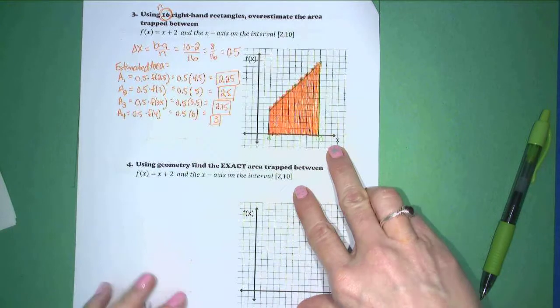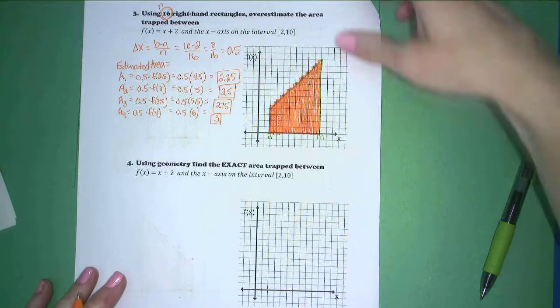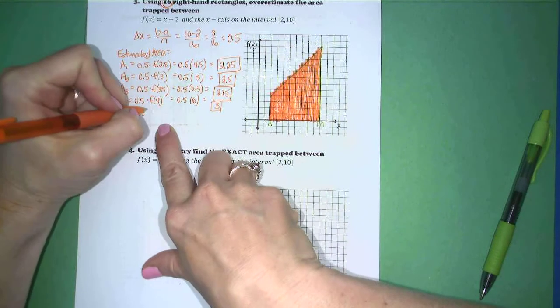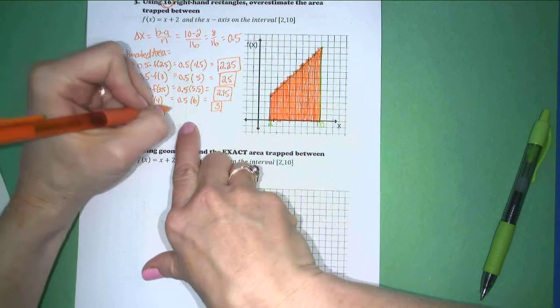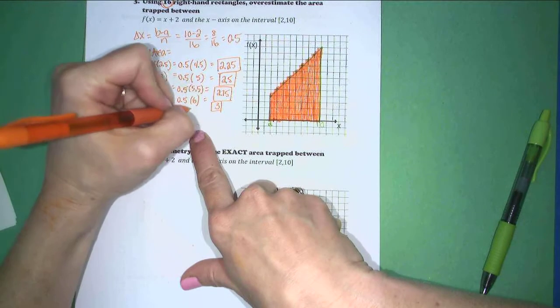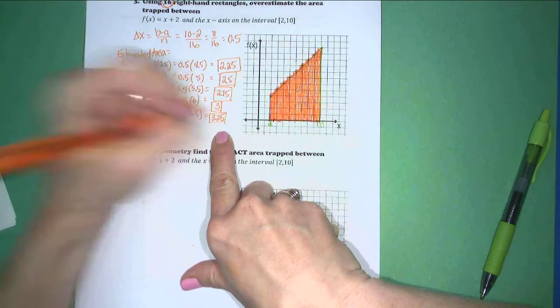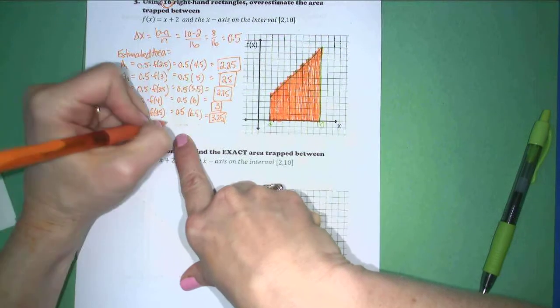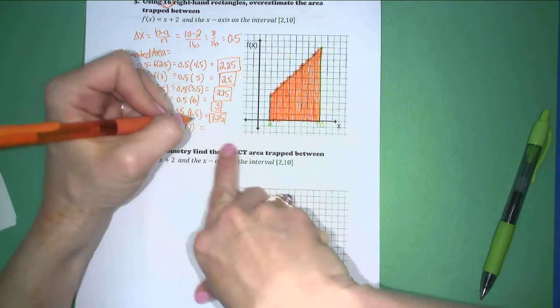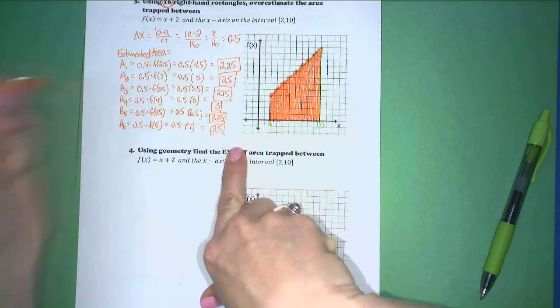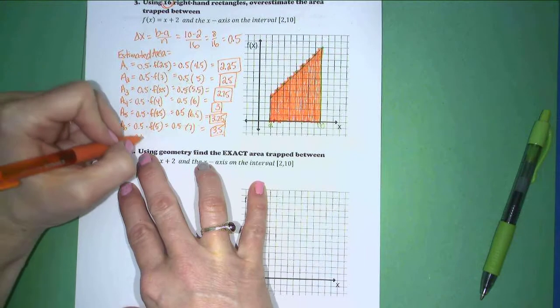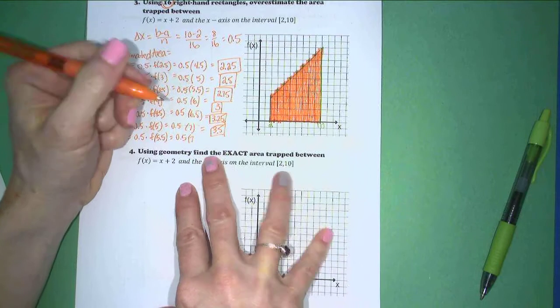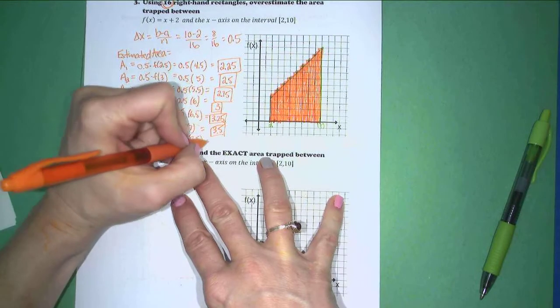So if I follow my area pattern here, here's what I'm going to end up having. Area 5 will simply be half times f of 4.5, which is 0.5 times 6.5, which should be 3.25. Area 6. 0.5 times f of 5, which is 0.5 times 7, which should be 3.5. Area 7. 0.5 times f of 5.5, 0.5 times 7.5, which should be 3.75.